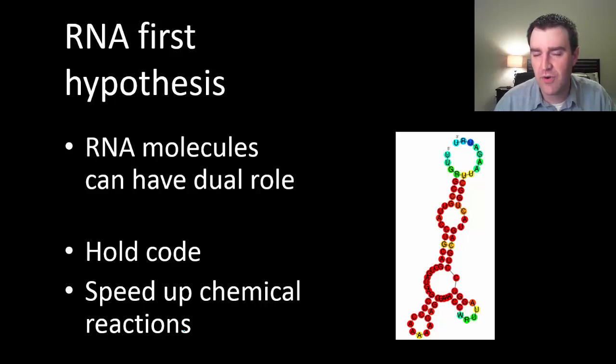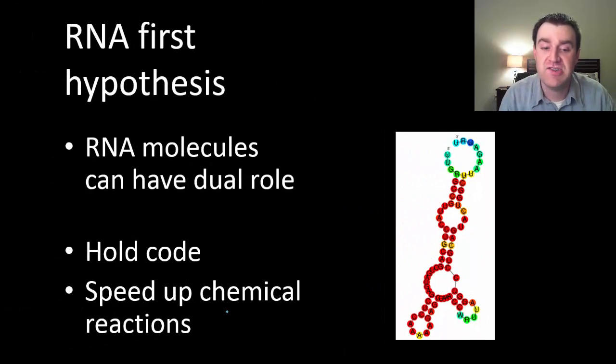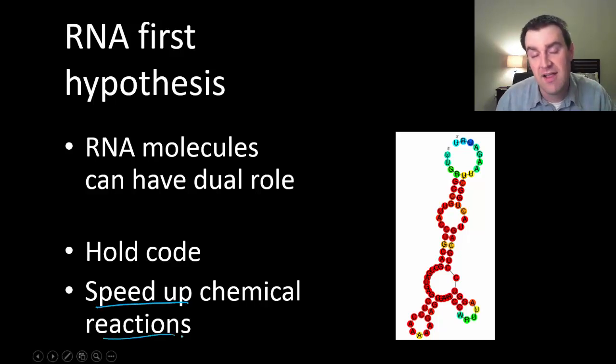We sort of appreciate that even in modern organisms now, there are RNAs that are very interesting because they can sort of hold a code still. They still have a nitrogen-based sequence that kind of holds information itself in it, just like DNA. But these RNAs with their specific sequences can actually have specific 3D shapes, just like proteins did when we talked about them. And we actually find that there are still RNAs in cells today that can actually do chemistry like protein enzymes can.